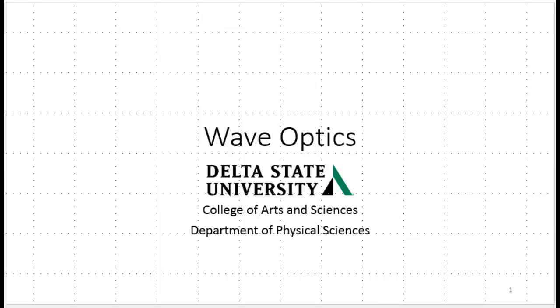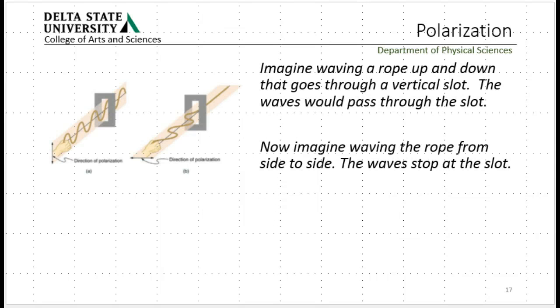Alright, now for the last bit on wave optics. We're going to talk about polarization. If you imagine you had a rope, you're shaking up and down, sending a wave down the rope, and it was going through a vertical slit, the wave would pass right through and keep on going. But if it goes through a slit and the wave is going horizontal and the slit's vertical, then the slit is going to bring the wave to an end. It's just simply not going to go through.